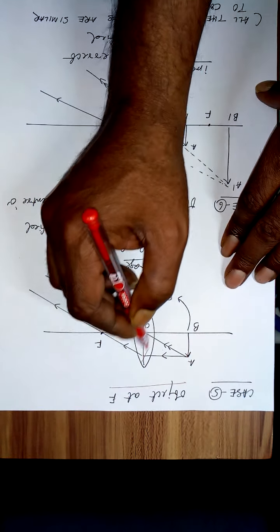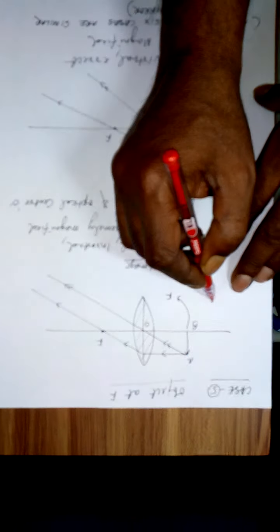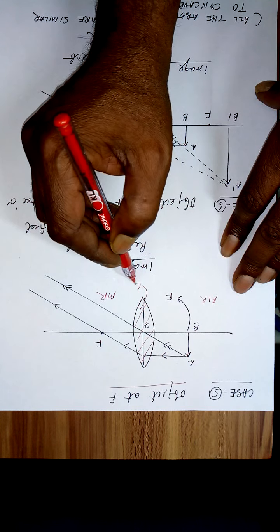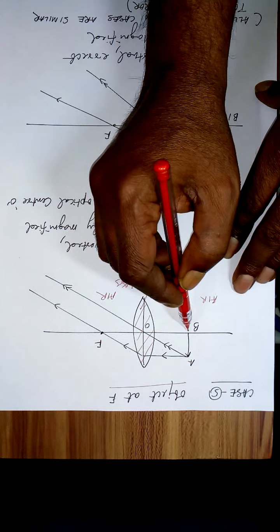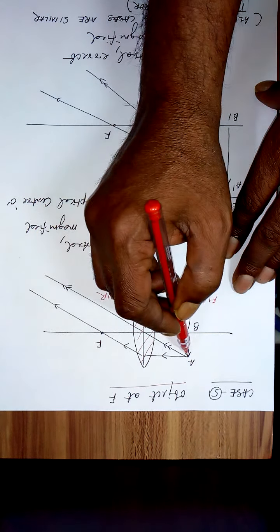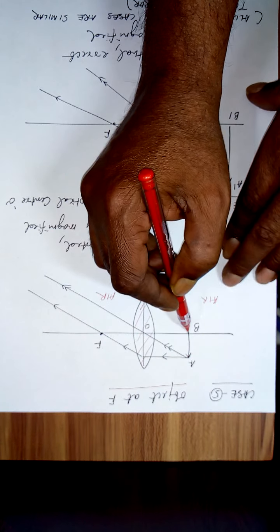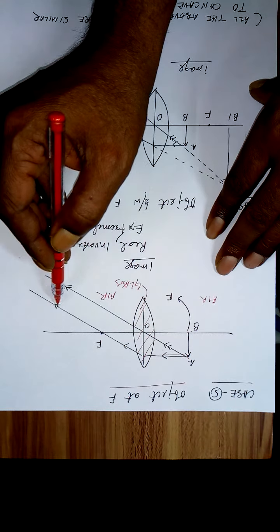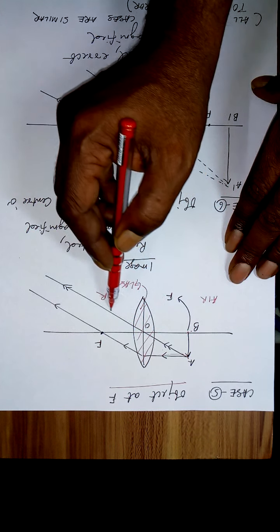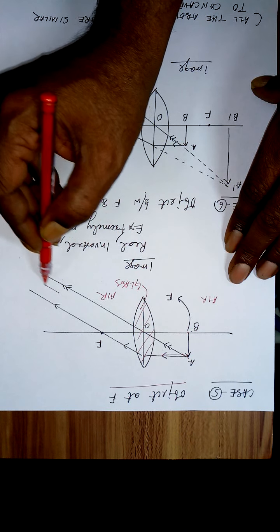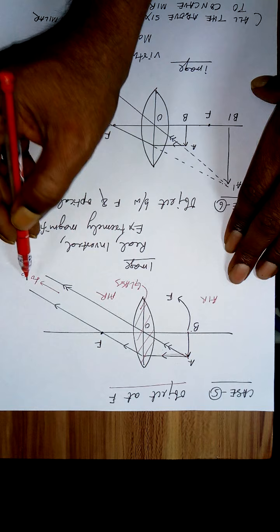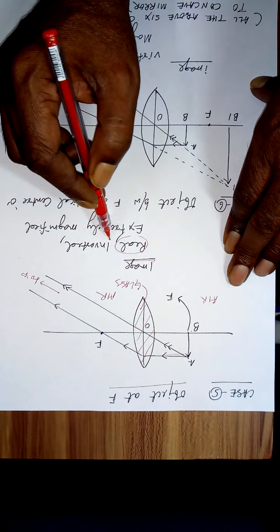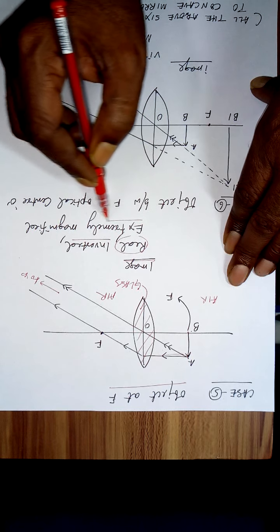Case 5: when the object is at f. The lens is surrounded by air on both sides and made of glass. A ray parallel to the axis passes through the focus; a ray through the optical center goes undeviated — these two emerge parallel, so they meet at infinity. The image is at infinity and extremely magnified.